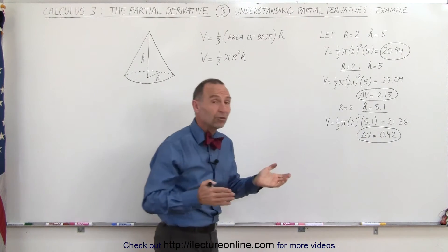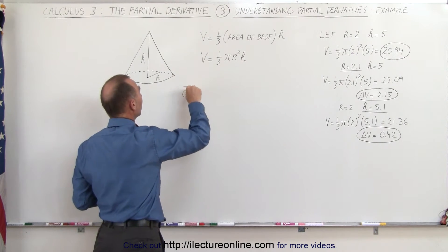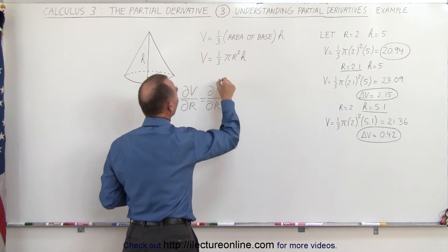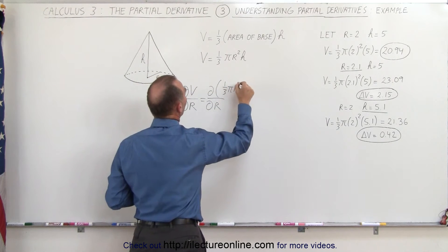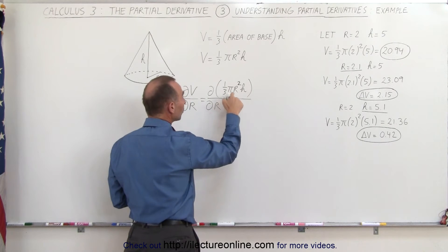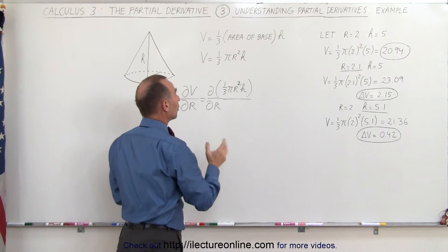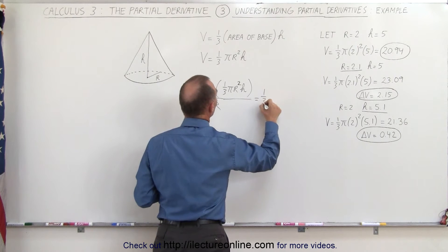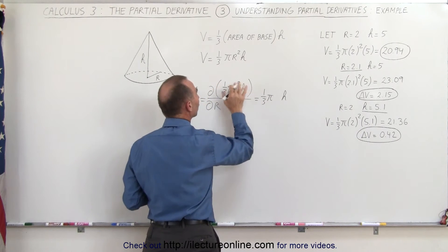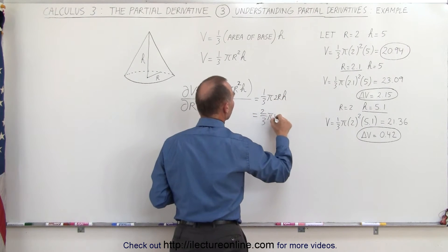We're now going to find similar values by taking the partial derivative so we can compare. Let's take the partial derivative of the volume with respect to the radius. That's equal to the partial with respect to r of (1/3)πr²h. Notice that 1/3, π, and h are all constants — only r is the variable. So the partial derivative equals (1/3)πh times the derivative of r², which is 2r, giving us (2/3)πrh.